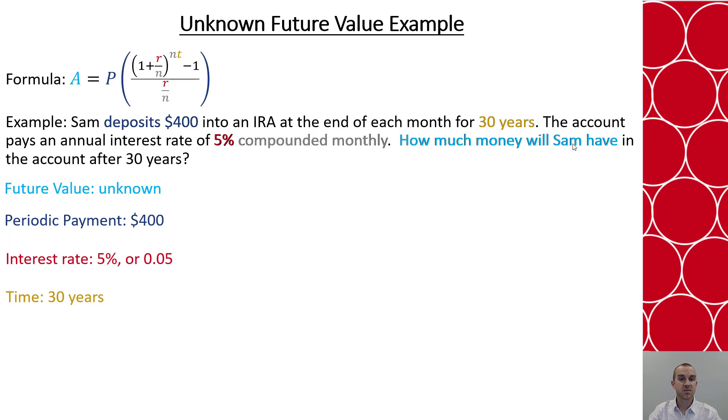And last thing is that it's being compounded monthly. That means it's happening 12 times every year, and that matches with how many times Sam is depositing into the account every month, which is 12 times in a year.